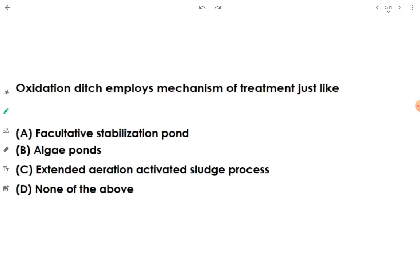Question number one asks: oxidation ditch employs a mechanism of treatment just like extended aeration activated sludge process. Option C is the correct answer. The similarity between extended aeration ASP and oxidation ditch is that in extended aeration we detain the wastewater for a long time and keep mixing air or oxygen in the wastewater for a long time. Same way, the oxidation ditch receives raw sewage that passes through a screen and then enters a long channel shape.